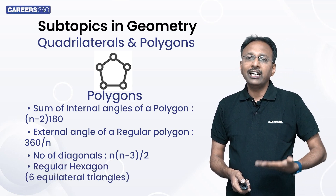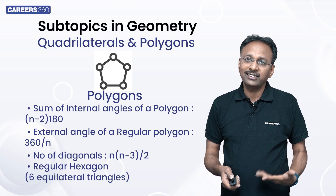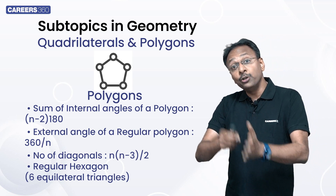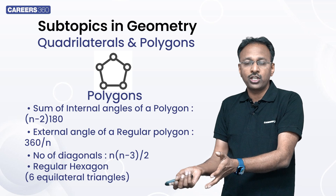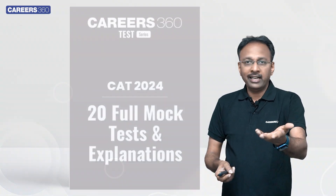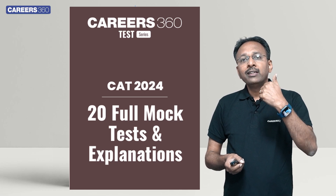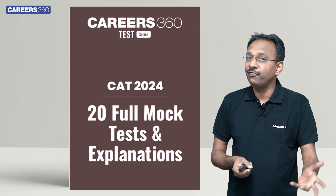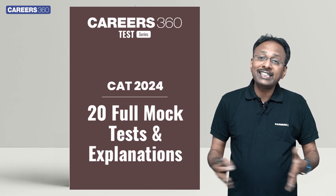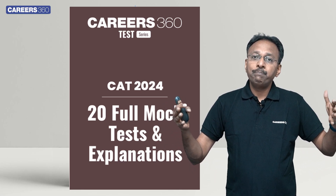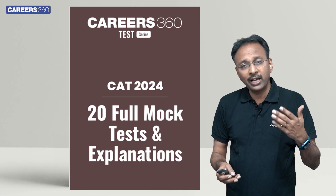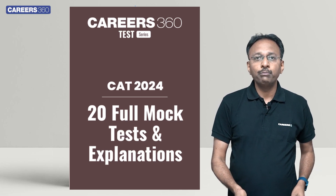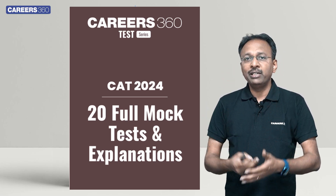A regular hexagon consists of 6 equilateral triangles — 360/6 gives you 60 degrees in each triangle, all the same. If you understand these concepts, look at solutions, and solve questions from CAT papers or mock CATs — Careers360 is coming out with 20 free mocks for you, plus 10 original CAT papers with answers compiled in PDF format. You can see the links and download them.